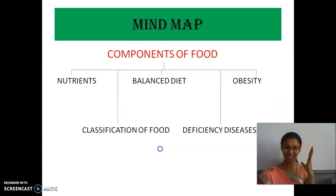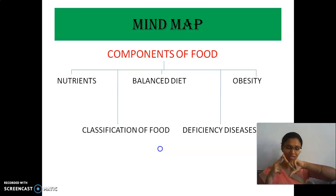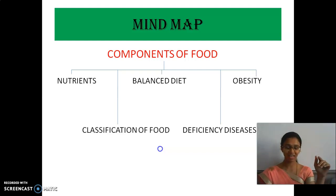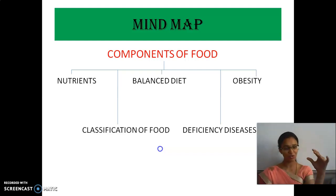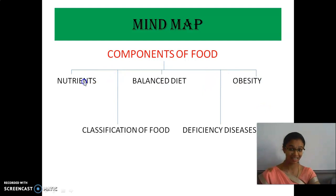And then the mind map. If the lesson 'components of food' comes to your mind, think of the mind map first. What is the first thing we had seen? We had seen about nutrients — the components which are present in the food are called nutrients. And then types of nutrients — there are six categories including water. And then classification of food based on nutrients. And then deficiency diseases and obesity. These are all the topics we had discussed in this lesson.